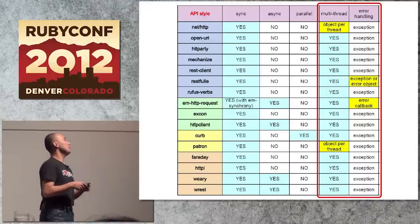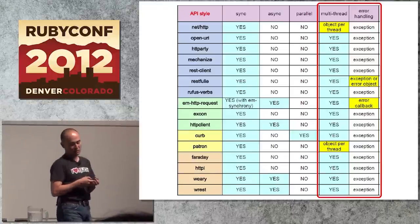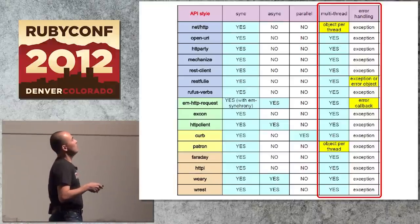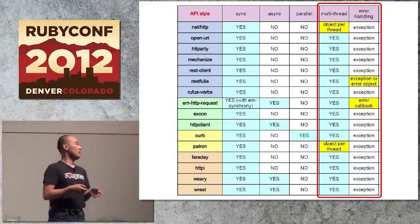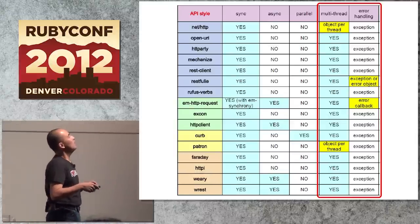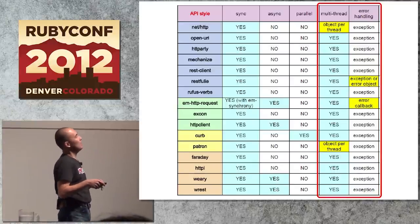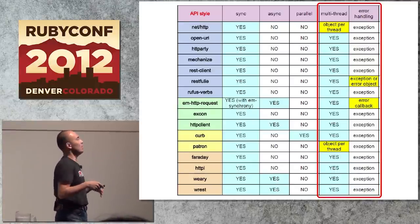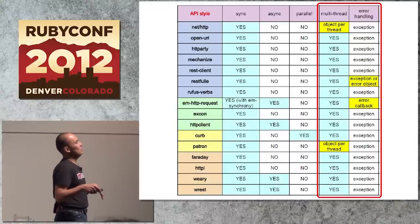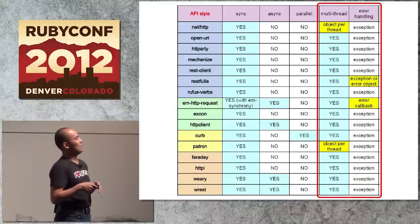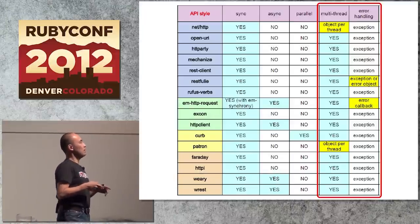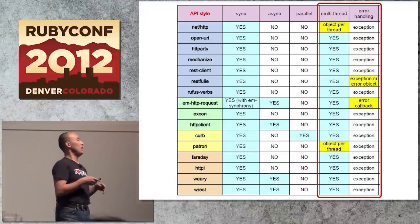For multi-threading, almost all libraries support it, so developers don't need to worry. However, NetHttp and Patron require the developer to instantiate objects per thread, so you need to care about multi-threaded environments. Error handling almost always raises exceptions when an error happens, but for REST3, developers can configure it to return an error object instead of raising an exception. EM HTTP Request requires an error callback as shown earlier.